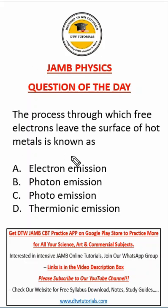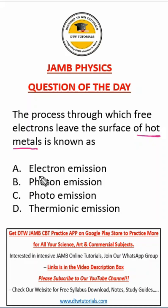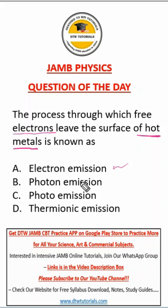This is a JAM physics question. It asks: the process through which free electrons leave the surface of hot metals is known as — now most people will just go for 'electron emission,' but that's not correct. Electron emission is a term that embodies all the types, so it's too broad an answer.